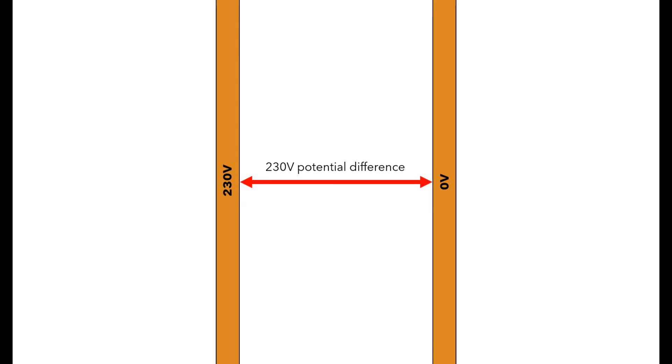If we then introduce the 230 volts to one pipe, the potential difference between the two would now be 230 volts. 230 volts minus zero volts equals 230 volts, so we now have a potential difference of 230 volts.